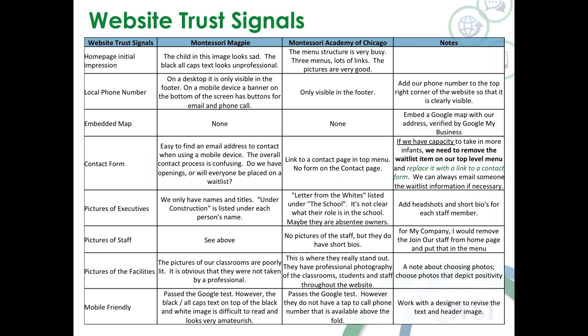Whereas Montessori Academy of Chicago — the kid looks engaged with the camera, you get a sense of an open learning environment. You can see immediately they're accepting fall applications, which is what the website is about. There's a very well-defined menu structure so people can access information as they need it. Right away we can see striking differences between the two schools. We take the template and start populating it with all of the information, starting with the trust signals.